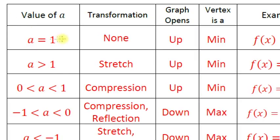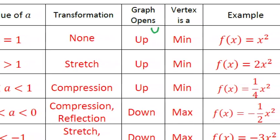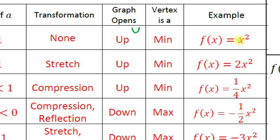First, what if a equals 1? When a equals 1, there's no transformation — it's not being stretched or compressed, it's a normal shape. The graph opens up, and because it opens up, the vertex is the minimum point on the graph. An example is f(x) = x², where the a value is not written, meaning it equals 1. This graph is not stretched or compressed and opens up with the vertex as a minimum.